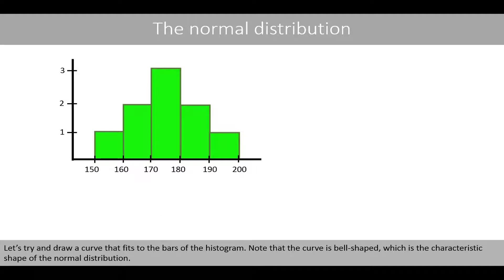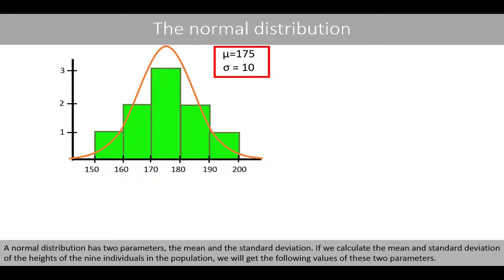Let's try to draw a curve that fits the bars of the histogram. Note that the curve is bell-shaped, which is the characteristic shape of the normal distribution. A normal distribution has two parameters: the mean and the standard deviation.